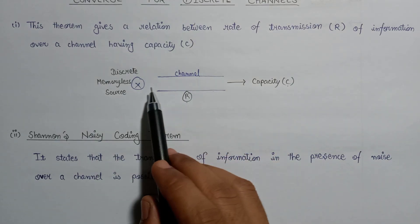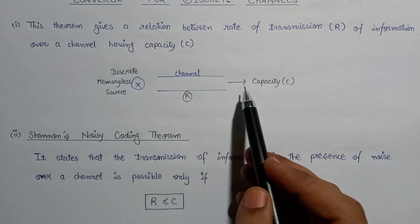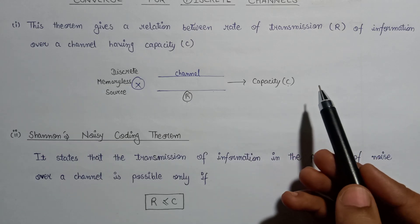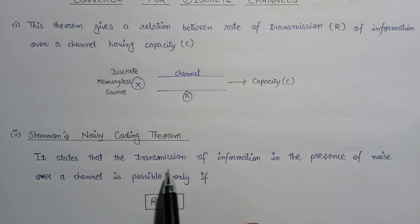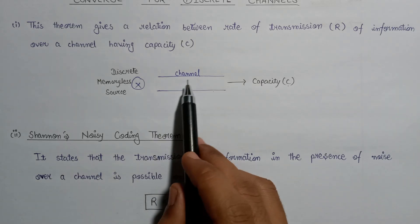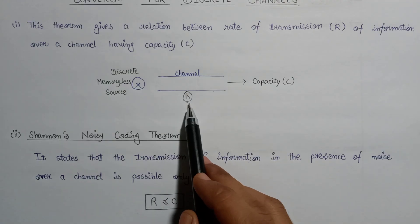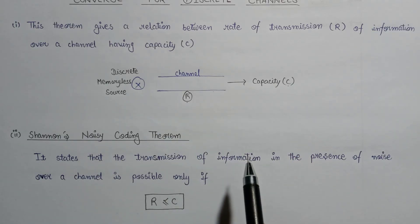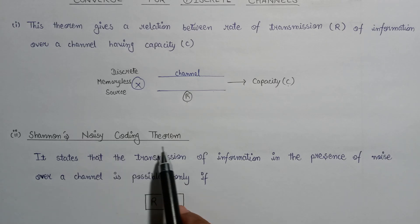Let's understand this statement with the help of a diagram. Assume this is a noisy channel. If we transmit information over this channel, we will not get the original information as output. But according to Shannon, transmission of information over the noisy channel is possible if and only if the rate of transmission R is less than or equal to the capacity of the channel C.